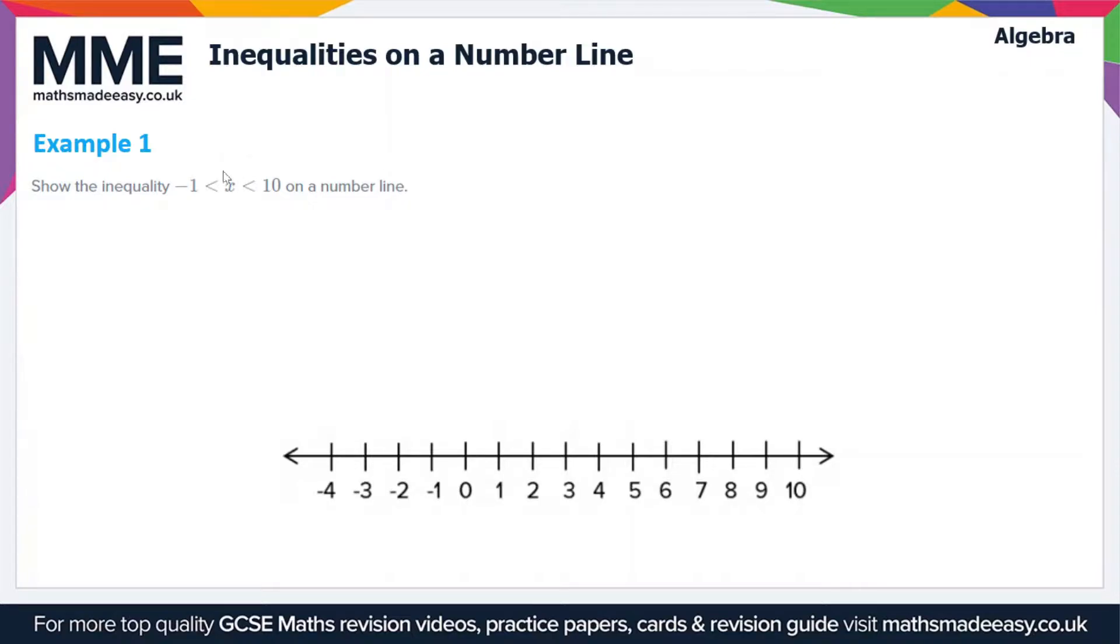In this first example, we have to show the inequality x is between -1 and 10 on a number line. You'll notice that the inequalities are strict here, so x does not include the values of -1 and 10.